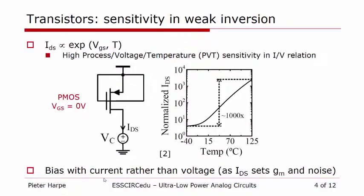Is it only good news? Well, not really, because the drain-source current in weak inversion is exponentially related to the voltages and the temperature. Because of that, the transistors are very sensitive to process, voltage, and temperature variations. On this slide, you see a simulation of a PMOS transistor with a gate-source voltage equal to zero, where we simulate what happens with the current if you sweep the temperature. The current will change by about a factor of 1,000 over this range. It's very hard to make a reliable circuit if your current — and because of that your other parameters — are shifting so much over the temperature range. So this is one reason to be careful in weak inversion mode. A strong advice is to bias your critical transistors with current rather than with voltages, because in that way you avoid large variation over temperature and process, and you have better definition of your transconductance and your noise.